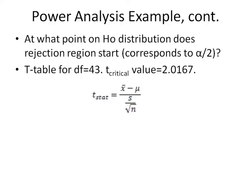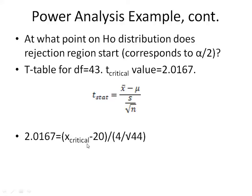Next, knowing our t-critical value, we're going to find the point on the null hypothesis distribution that corresponds to this value. We know our t-critical value is 2.0167, our mu is 20, our sample standard deviation is 4, and our sample size is 44. So we can calculate our x-critical value, which is 21.2161.